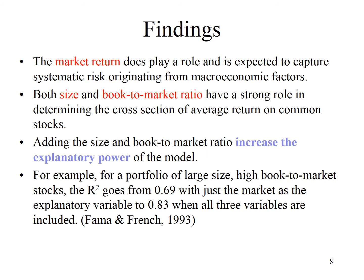Let's understand the key findings of Fama and French. The question is: are the three factors significant in explaining stock returns? The answer is yes. Market return, size, and book-to-market ratio are found to have a strong influence on the average return of common stocks. Adding the size and book-to-market ratio increases the explanatory power of the model. This is evidenced by R², which increases from 0.69 to 0.83 when all three variables are included.